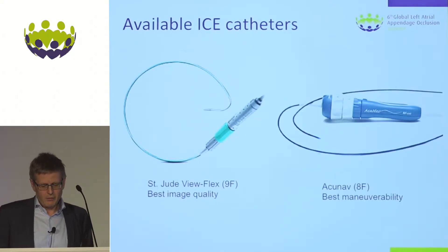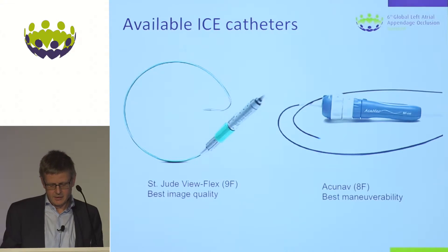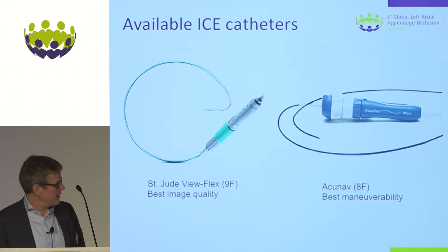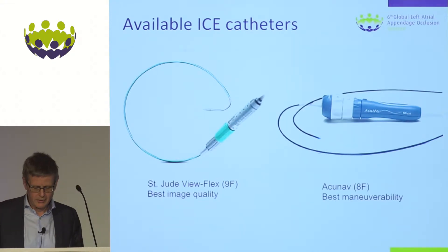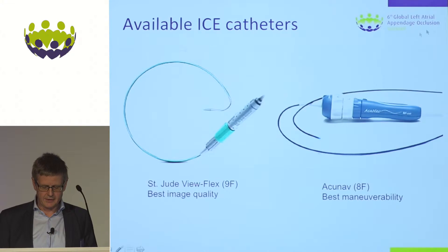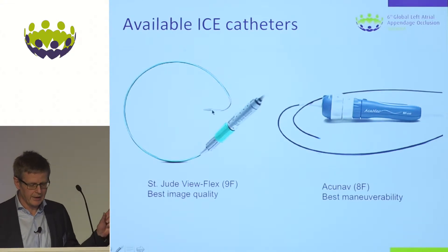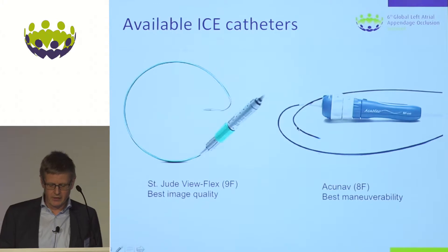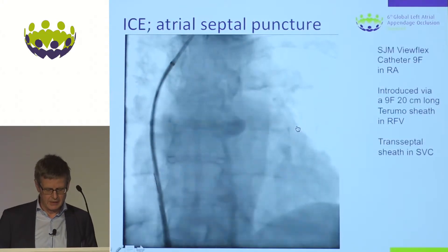We saw two options for ICE catheters: the St. Jude ViewFlex, a 9-French catheter, and the AcuNav Siemens catheter, an 8-French catheter. I think you obtain the best image quality with the St. Jude catheter, but the AcuNav offers a little better maneuverability. The tip of the ViewFlex catheter is a little longer, which makes it more difficult to rotate and sweep, whereas the AcuNav tip is shorter. Both have their advantages and disadvantages.